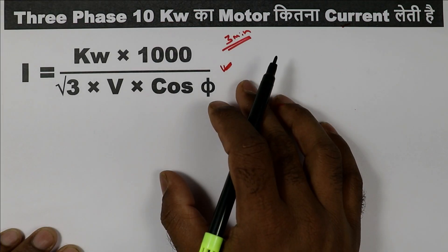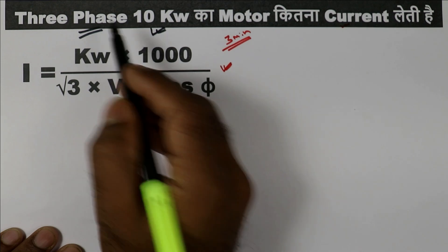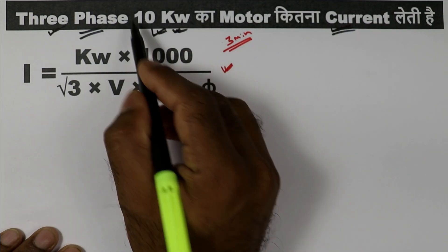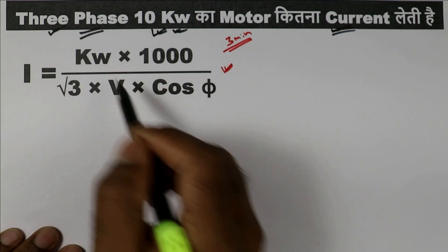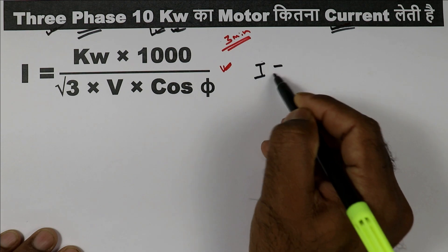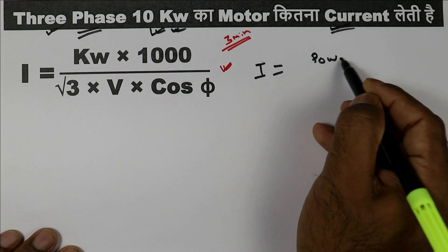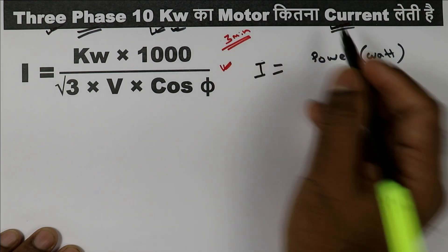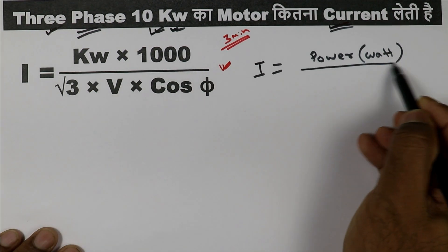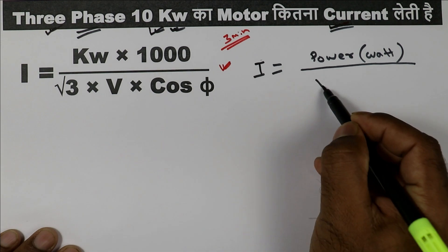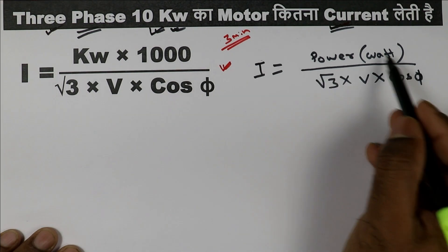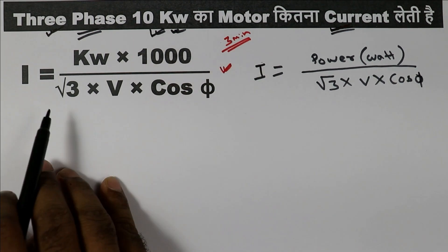Suppose in your interview you were asked to find the current rating of a 10kW 3-phase motor. If the question is in kW and it is for 3-phase, you have to use this formula: I equals power in watts divided by root 3, multiplied by voltage, multiplied by power factor. So by using this formula, you can find the answer.